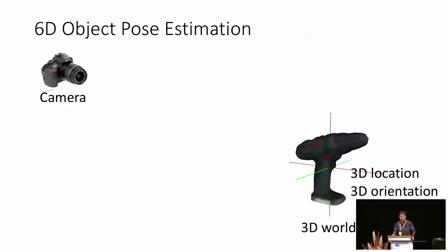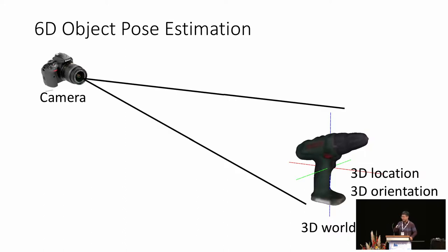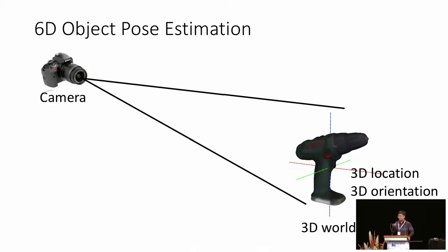The problem we are interested in is 6D Object Pose Estimation. Assuming we have an object in 3D space, by using a camera we can obtain the appearance of the object from a specific viewpoint. In 6D Object Pose Estimation task, we want to use this image to retrieve the 3D location and the 3D orientation of the object relative to the camera.